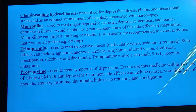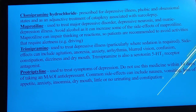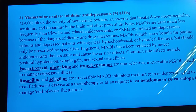Trimipramine is used for depressive illness; side effects include agitation, lack of appetite, anorexia, anxiety, arrhythmias, blurred vision, confusion, constipation, dizziness, and dry mouth. Protriptyline is used to treat symptoms of depression; it must not be given within 14 days of monoamine oxidase inhibitors; side effects include nausea, vomiting, loss of appetite, insomnia, dry mouth, urinary retention, and constipation.